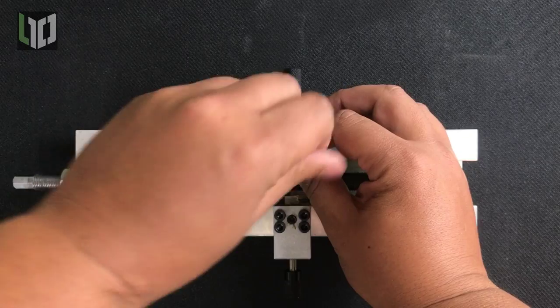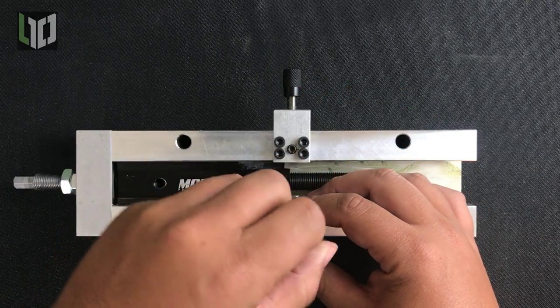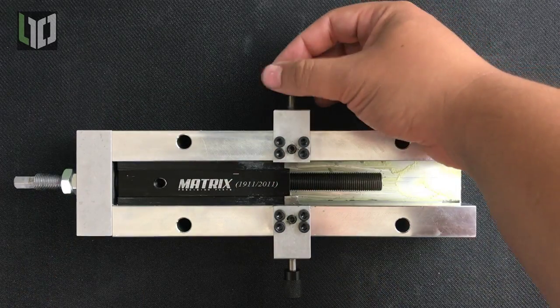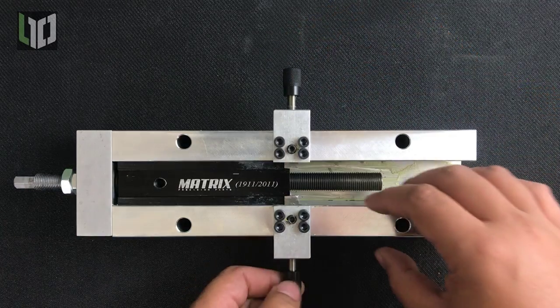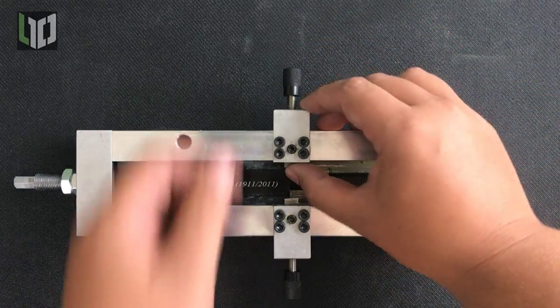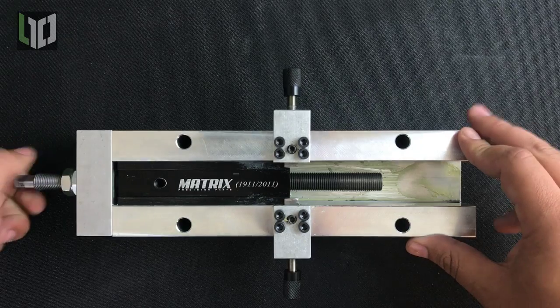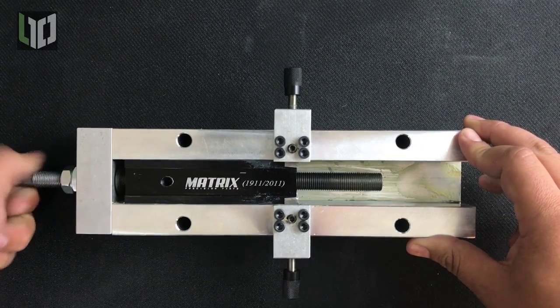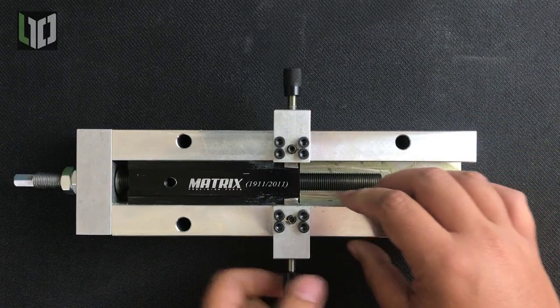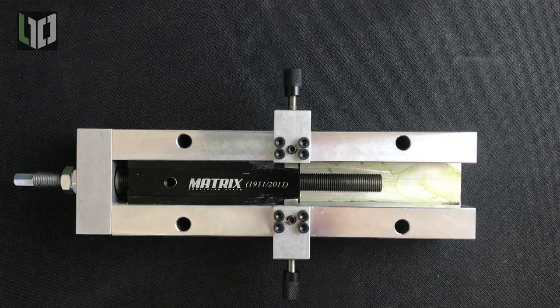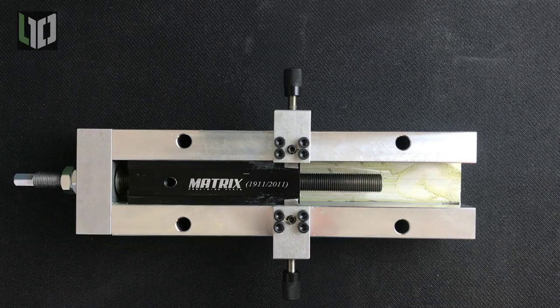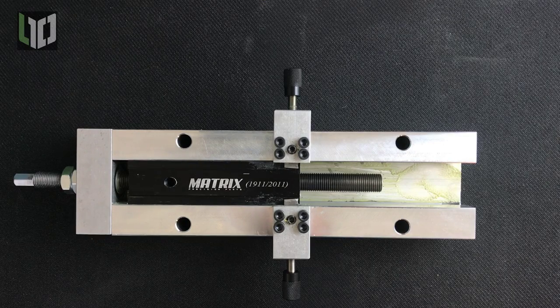For initial setup you will need to loosen the allen keys which are securely fastening the carbide cutters using the included allen keys. The carbide cutters we are using measuring at 117 thick. Once the allen screws are loose back off each of the two knobs to index the cutter position. Use your fingers to push the cutters outwards so they are not sticking into the bottom most slot where the matrix logo is engraved. This will allow us to install our frame with the cutters backed off.